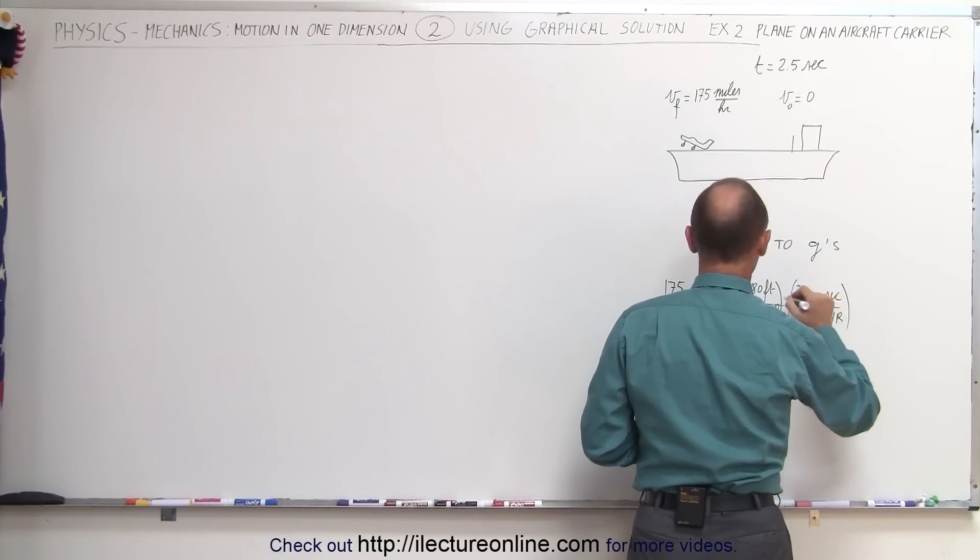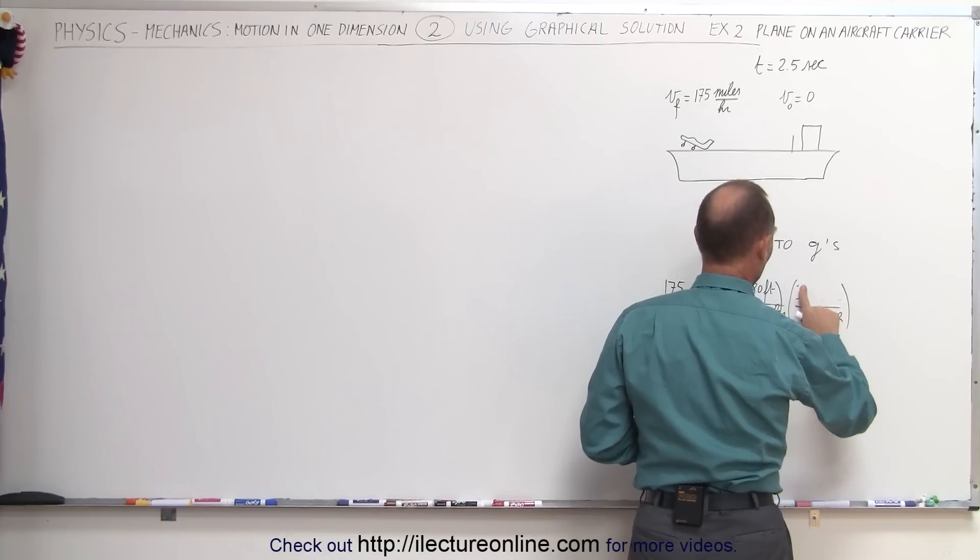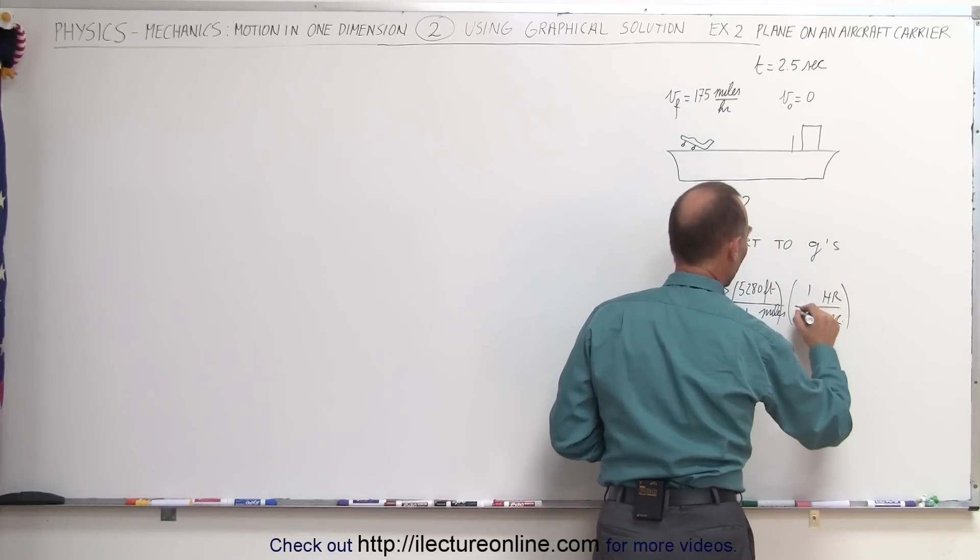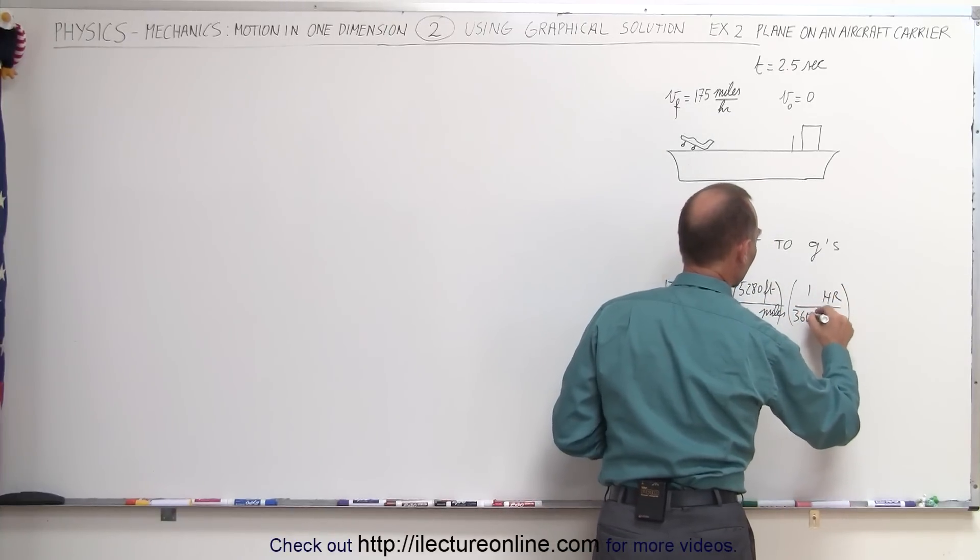One hour, 3,000. Let's take that back all the way around. We want hours in the numerator because we want to get rid of hours. We want seconds in the denominator, so one hour is 3,600 seconds.